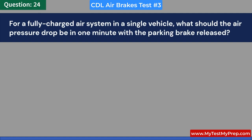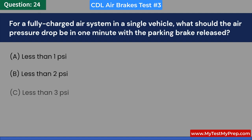For a fully charged air system in a single vehicle, what should the air pressure drop be in one minute with the parking brake released? A. Less than 1 PSI. B. Less than 2 PSI. C. Less than 3 PSI. D. Less than 4 PSI. Answer: B. Less than 2 PSI.